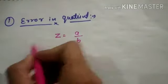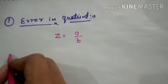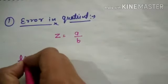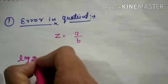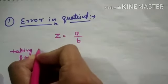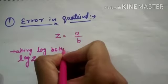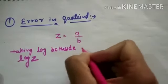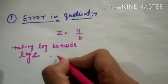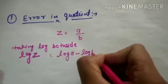To find the error in Z, we'll first take log of this term — taking log both sides. If we take log both sides, we'll get log Z equals log A minus log B.